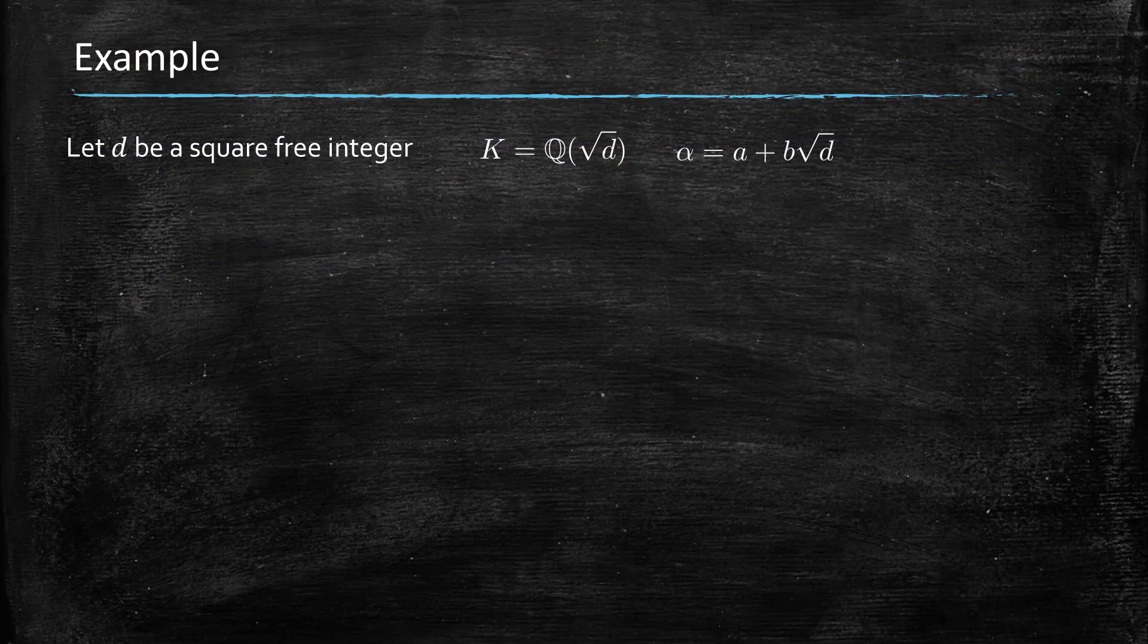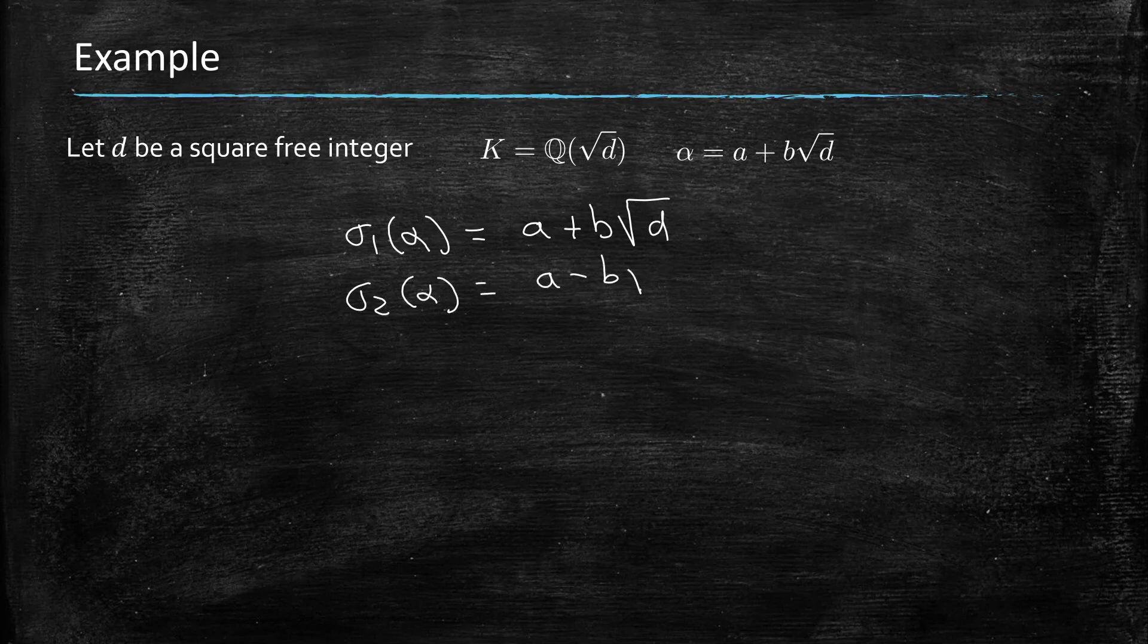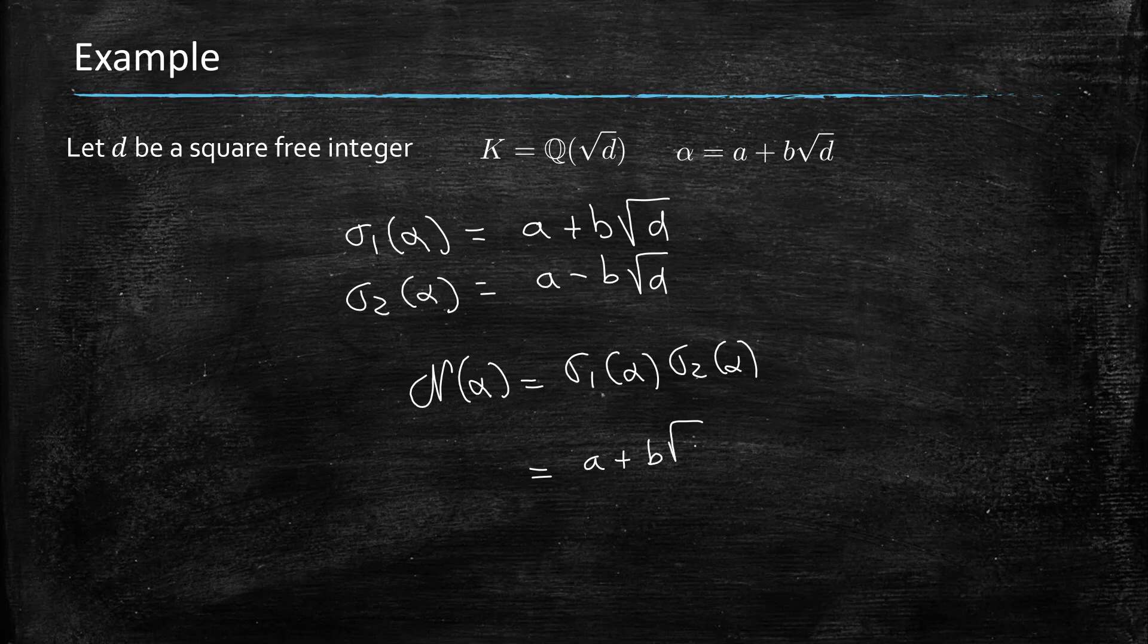Now let's calculate that on an example. We take again a very simple example of real quadratic fields. And here what we have is sigma 1 of alpha is simply the identity, so a plus b square root d, and then sigma 2 of alpha will be a minus b square root d. And then the norm of alpha is the product of those two values, sigma 1 alpha and sigma 2 alpha, and that is a squared minus b squared d. So that's my norm.